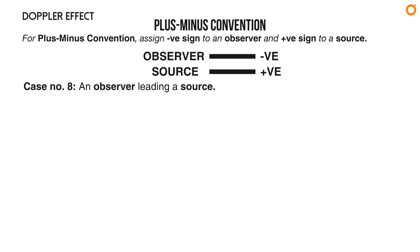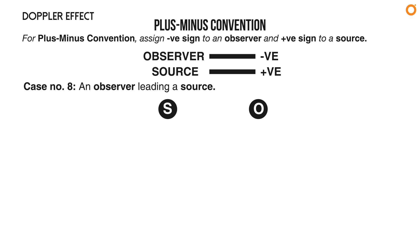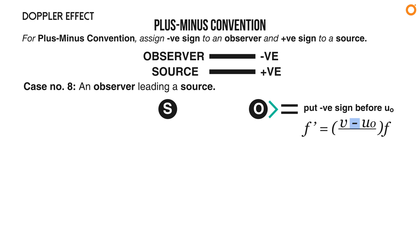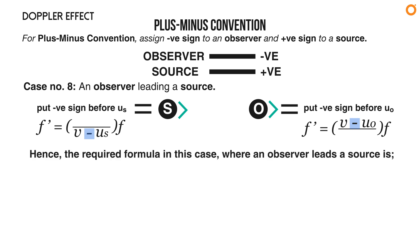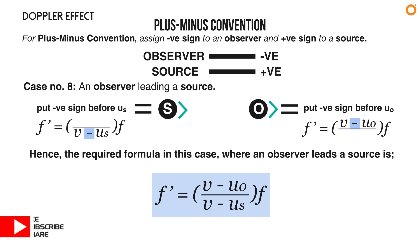Case number eight: an observer leading a source. The source and observer move in the same direction, but the source lags behind the observer. The observer moves away from the source, so put a negative sign before u₀. The source moves towards the observer, so put a negative sign before uₛ. The required formula is: f prime equals to (v minus u₀) divided by (v minus uₛ) times f.